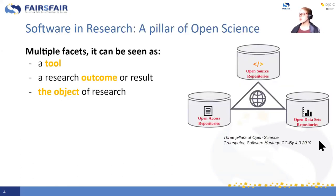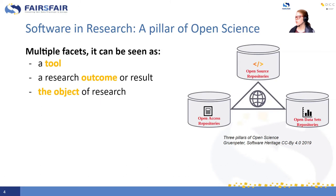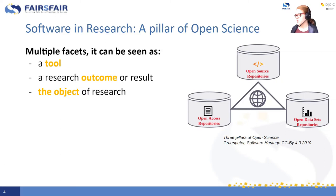Software in research can have various roles. It can be the tool you use to analyze your data, but it also makes it a major research outcome or result. In some cases, for example if you're researching video games, the code is actually the object of research. Because of the role it plays in open science, it should be shared in open repositories like Software Heritage. FAIR doesn't necessarily equal open, so there is a role for closed software here as well, but as part of the wider open science umbrella, we definitely see software playing a role.